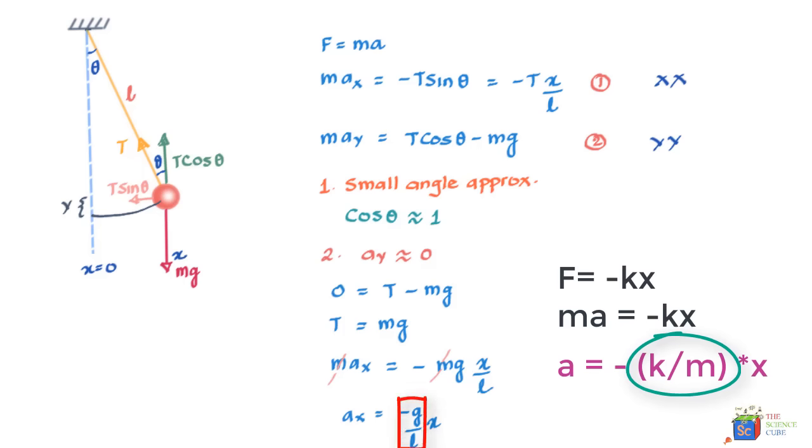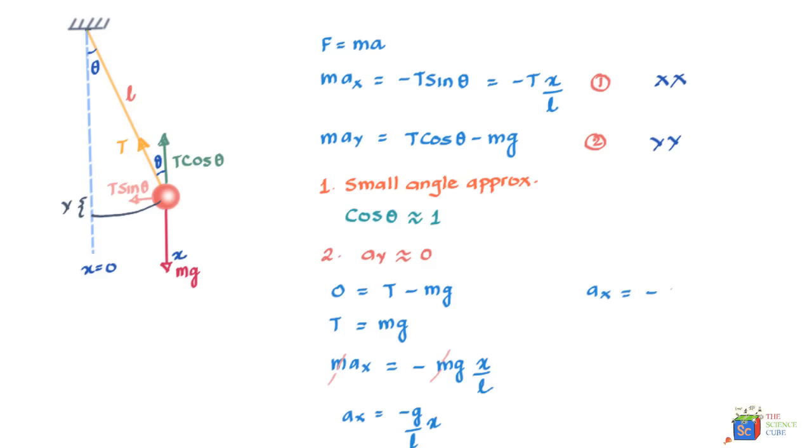We also know that ax is also equal to -omega square x, where omega is angular frequency, which therefore means that omega here is equal to the square root of g/L. If this is the case, we can say that the time period of the pendulum should equal 2π/ω. Therefore, time period should equal 2π√(L/g).